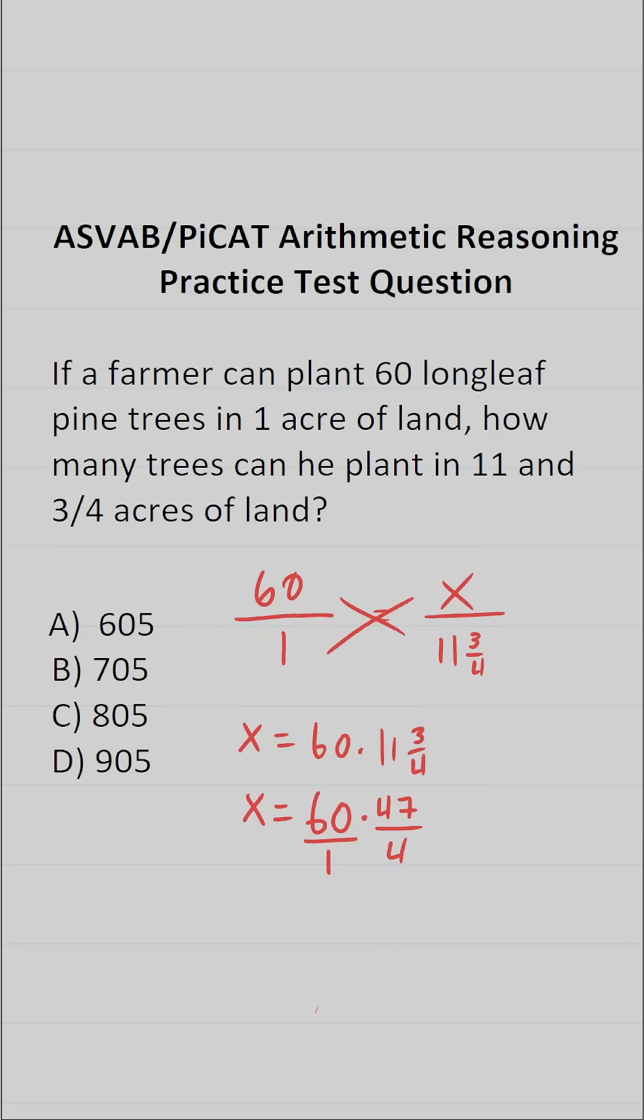More specifically, I can say 4 goes into 4 one time, 4 goes into 60, well, that's going to be 15 times. 60 divided by 4 is 15. So this becomes 15 over 1, which is 15, times 47 over 1, which is 47.